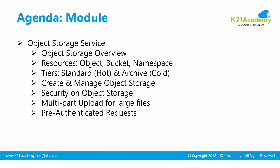Once we have covered block storage, we move on to object storage. We will look at an overview of object storage and the types of resources available within it — objects, buckets, namespace, and other associated resources. Within object storage there are two tiers: Standard, also called hot object storage, and archive storage, which is cold storage.